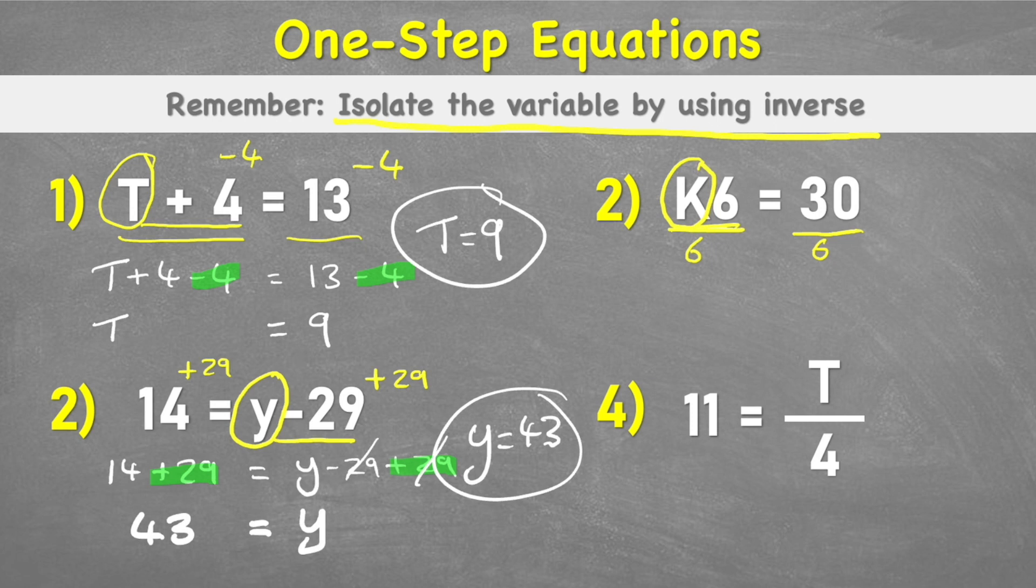Now I can begin to solve. Well, a times six and a divide by six cancel themselves out. So I'm left with just K equals thirty divided by six is five. So in this one, K equals five.